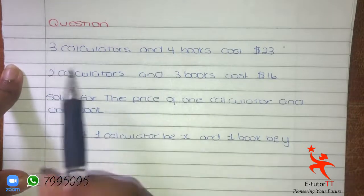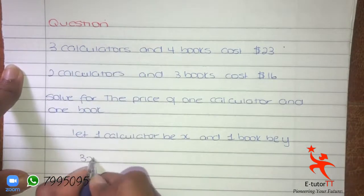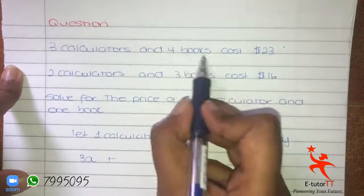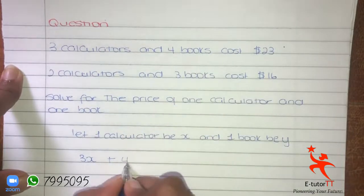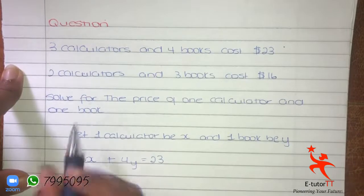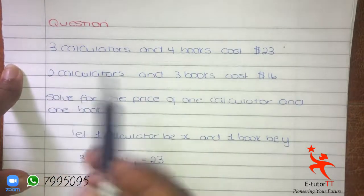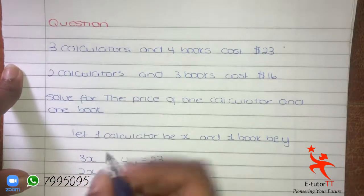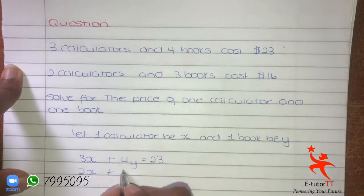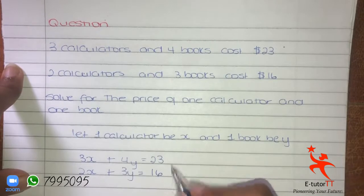We write this and then create the equations. So 3X — because 1 calculator is X, so 3 calculators is 3X — plus 4 books, and a book is Y, so 4 books will be 4Y, is equal to 23. For the second equation: 2 calculators is 2X, plus 3 books is 3Y, is equal to 16. So these are our two equations.